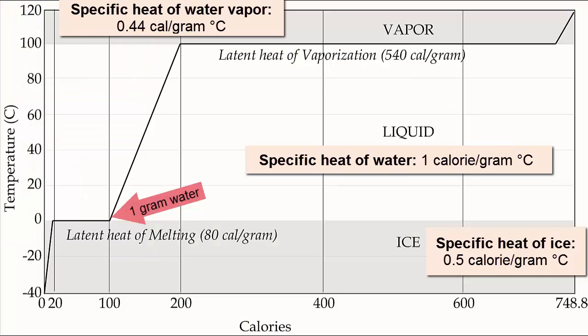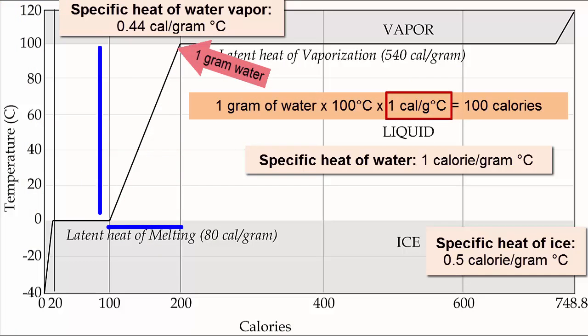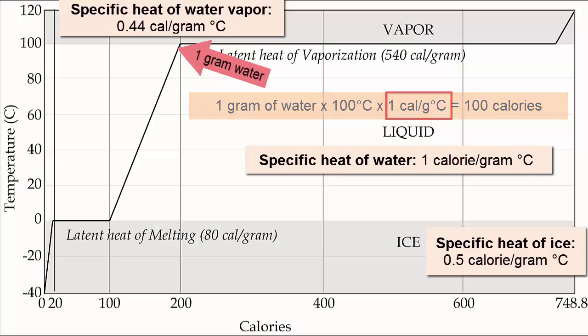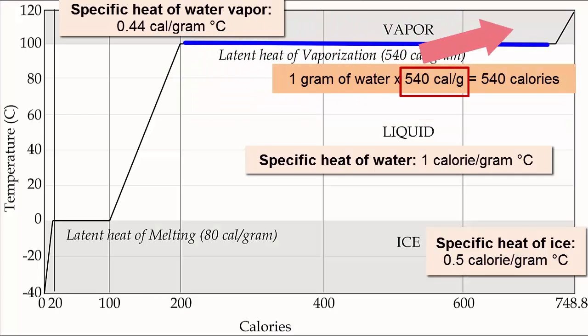Then we add another 100 calories to raise the liquid water's temperature to its boiling point — the specific heat of water is 1 calorie per gram degree Celsius. At the boiling point, we add 540 calories of heat to vaporize it.